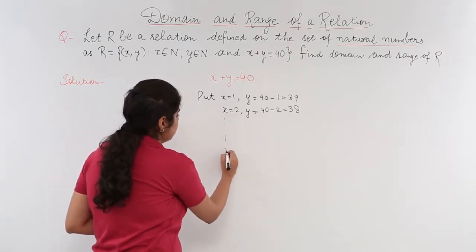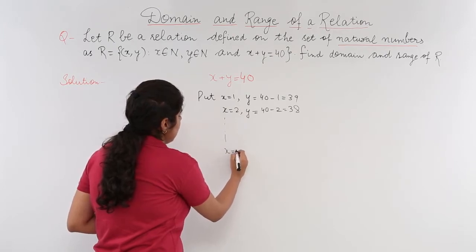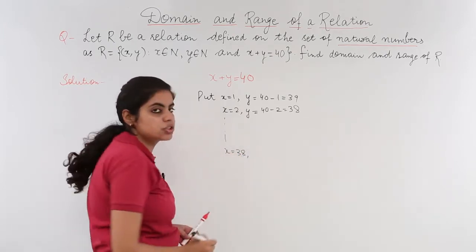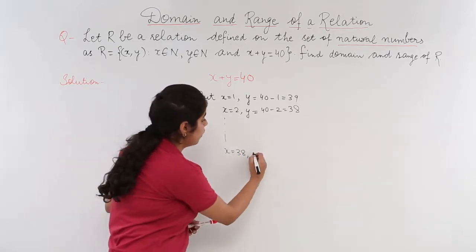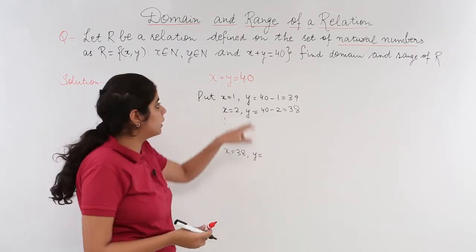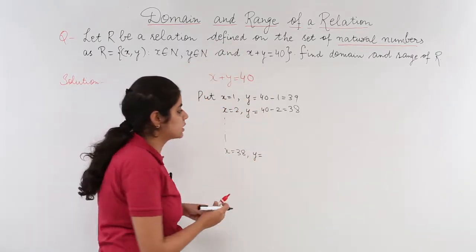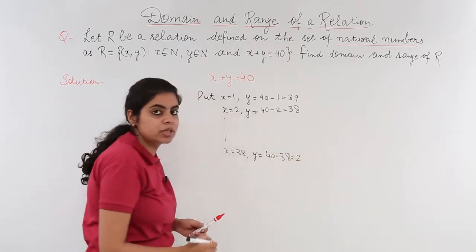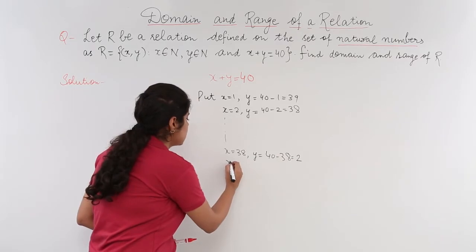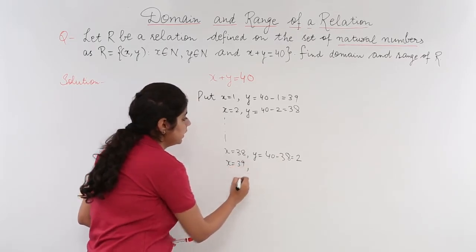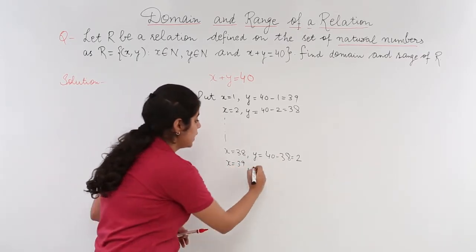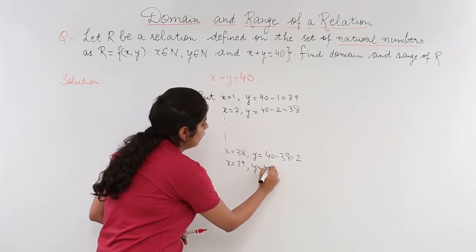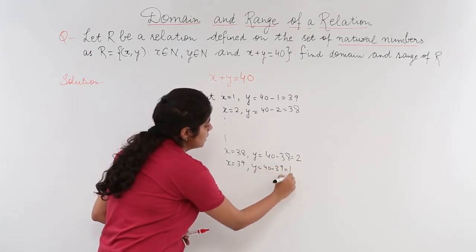Let's say this happens as x=38. If I put x=38, then what is y? y is nothing but 40-x, that is 40-38 which gives me 2. Similarly, when x=39, what is y? y is 40-39 which is 1.